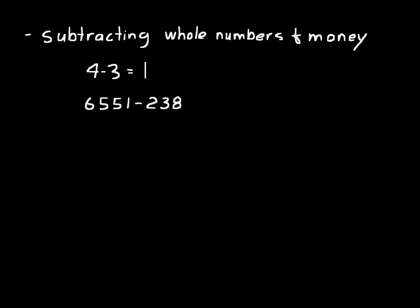Let's subtract 6551 minus 238. Line the digits with the same place value up. Remember we need to regroup when necessary. We can't do 1 from 8, so we carry 1 over from the 5, change it to 4. Now we have 11. 11 minus 8 is 3. Then 4 minus 3 is 1. 5 minus 2 is 3. Then we just have 6 by itself. We can put a comma: 6,313 is our answer.